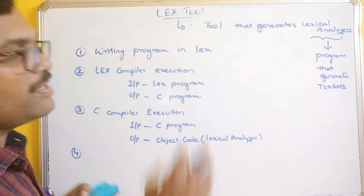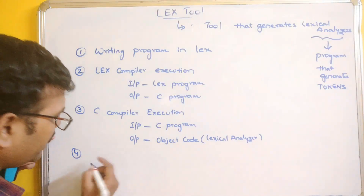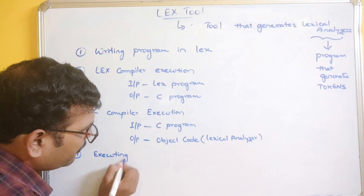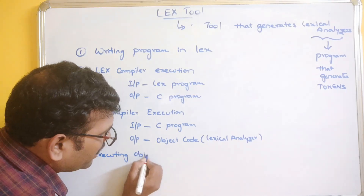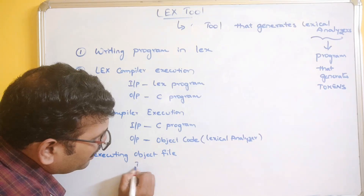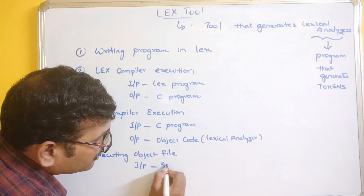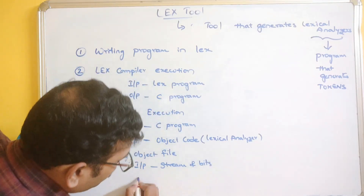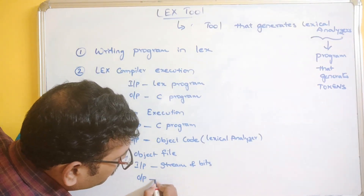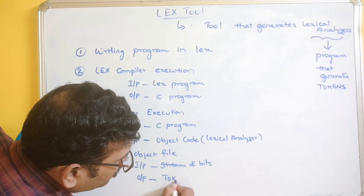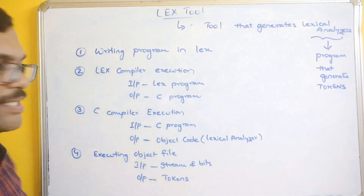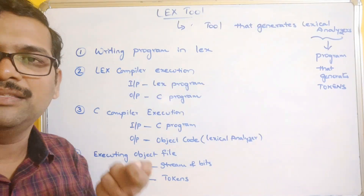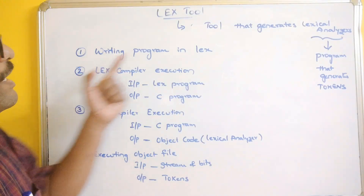We give some input to the lexical analyzer - the fourth step is executing the object file. The input will be a stream of bits, and the output will be a sequence of tokens. This is the overall process for getting the sequence of tokens.